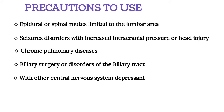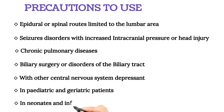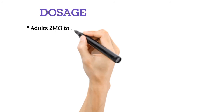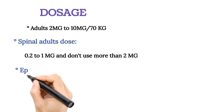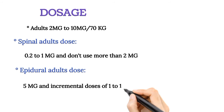Additional precautions in pediatric, geriatric patients, neonates, and infants. Dosage: Adults 2 mg to 10 mg per 70 kg body weight. Spinal adult dose: 0.2 to 1 mg; do not exceed 2 mg. Epidural adult dose: 5 mg, with incremental doses of 1 to 2 mg.